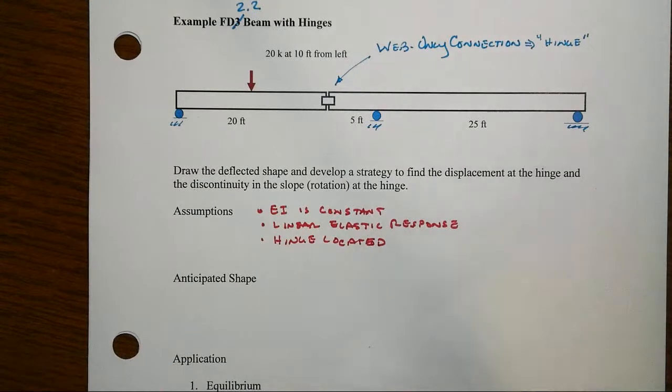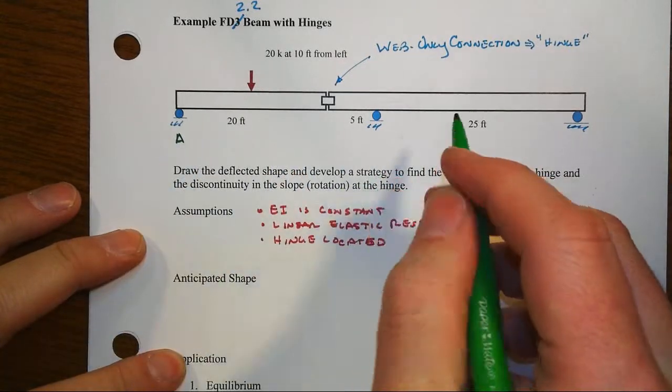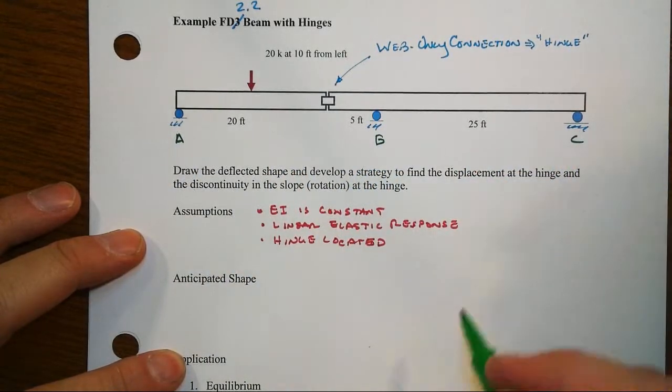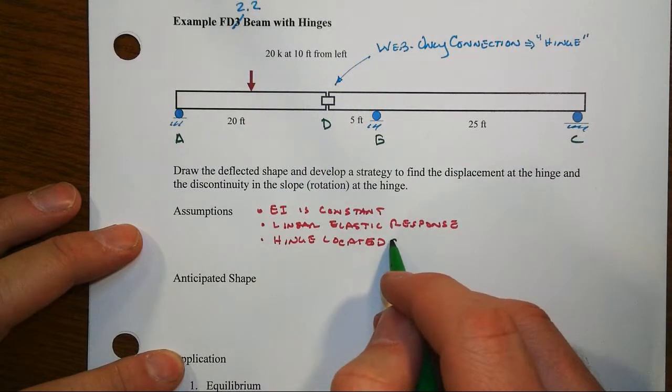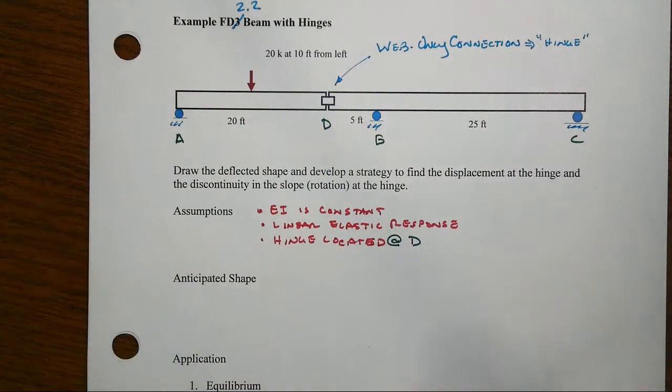that we have a hinge located. Well, nobody gave us any symbols for the location, so let's make them up ourselves. Let's call the supports A, B, and C, and let's call the location of the hinge D. So we have a hinge located at D because of the web-only connection.